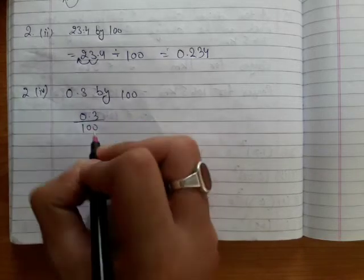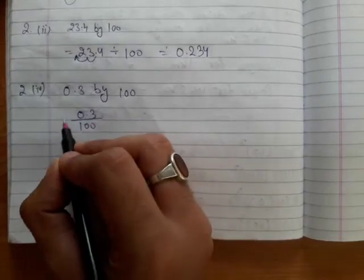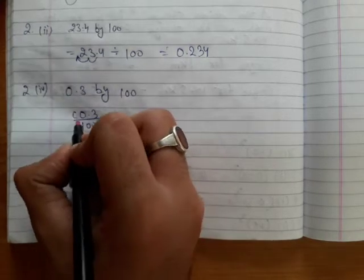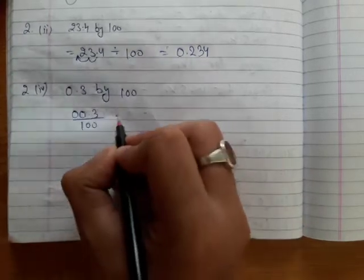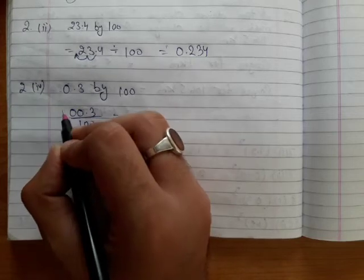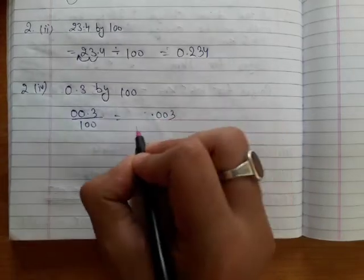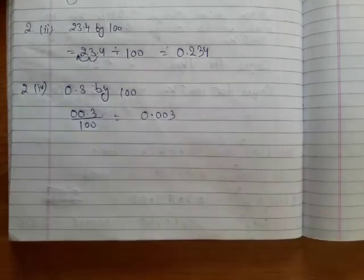We will shift the decimal point two digits to the left, but there is only one number, so we will add one zero here. Now we can shift the decimal two digits to the left, so it becomes 0.003. The answer is 0.003.